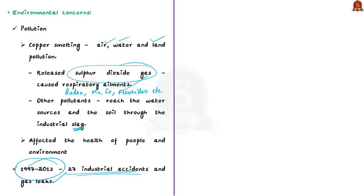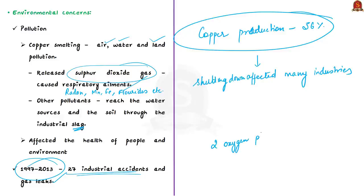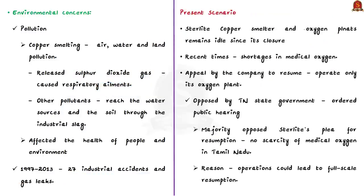The plant was kept open despite these disadvantages because it produced 36% of the copper used in India, and its shutdown impacted the copper industry and many manufacturing industries dependent on it. However, we cannot deny its adverse impacts on health and environment. The Sterlite copper unit in Thoothukudi has two oxygen-producing plants that were used to support combustion in the smelter process, but these were also closed in May 2018. The copper smelter unit and its oxygen plants have remained idle since closure.